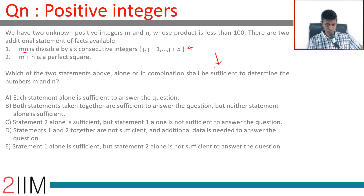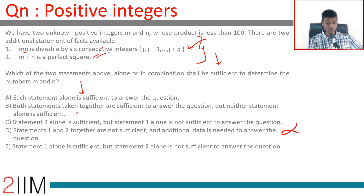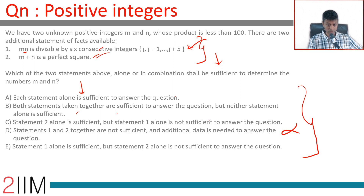Using statement 1, can you find m and n? Using statement 2, can you find m and n? Failing that, can you use both together and find them? The data sufficiency answer choices are: each statement alone is sufficient; both together are sufficient but neither alone is sufficient; statement 2 alone is sufficient but statement 1 alone is not; both together are not sufficient; or statement 1 alone is sufficient but statement 2 alone is not. The key is to go step by step.